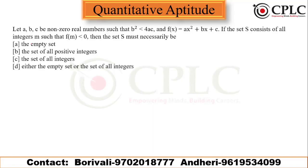Hello everyone, welcome to CPLC. Today we have a question from functions. Let a, b, c be non-zero real numbers such that b² < 4ac, and the function is f(x) = ax² + bx + c — basically a quadratic function. The set S consists of all integers m such that f(m) < 0. We need to find what set S must necessarily be.